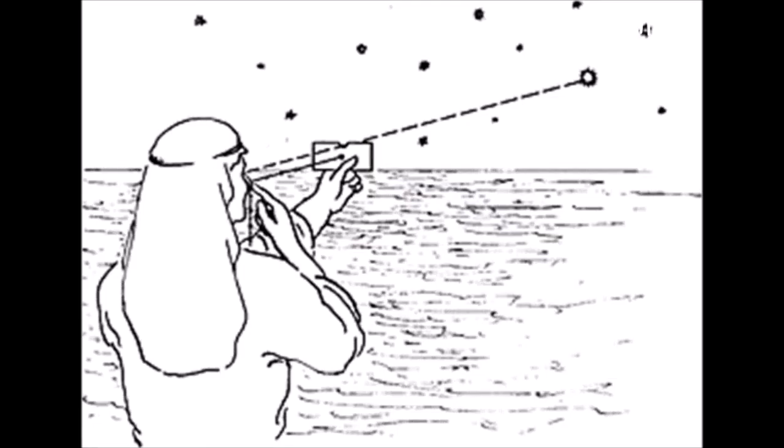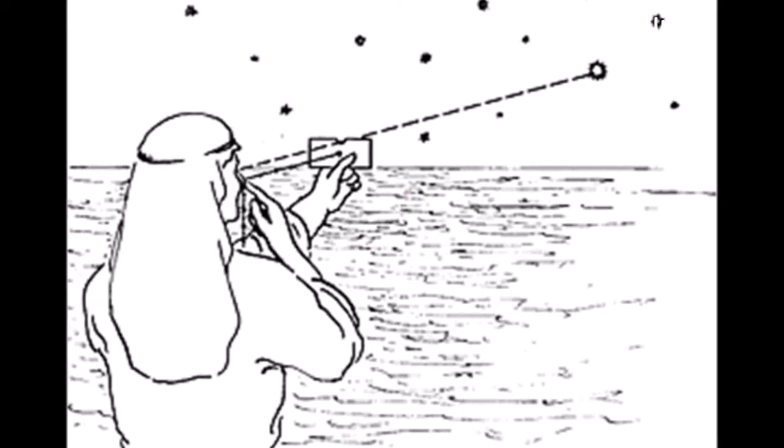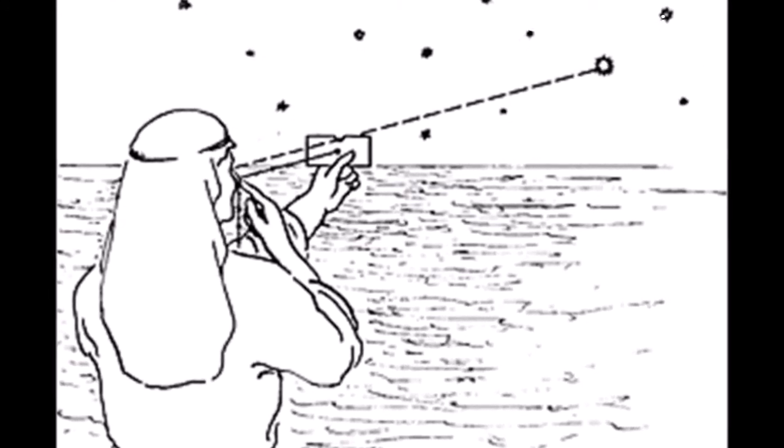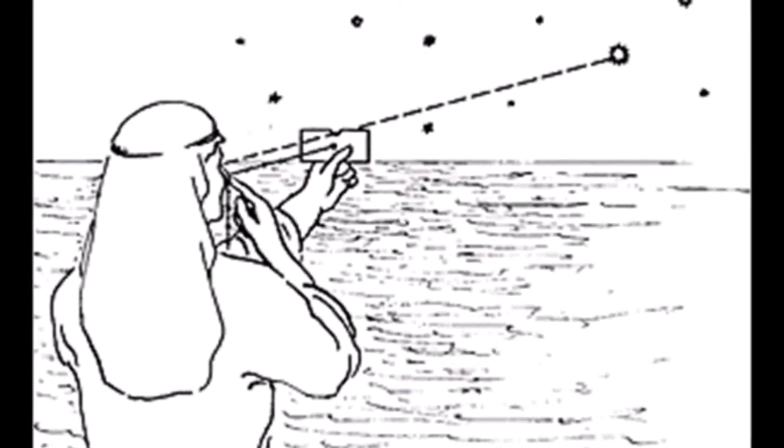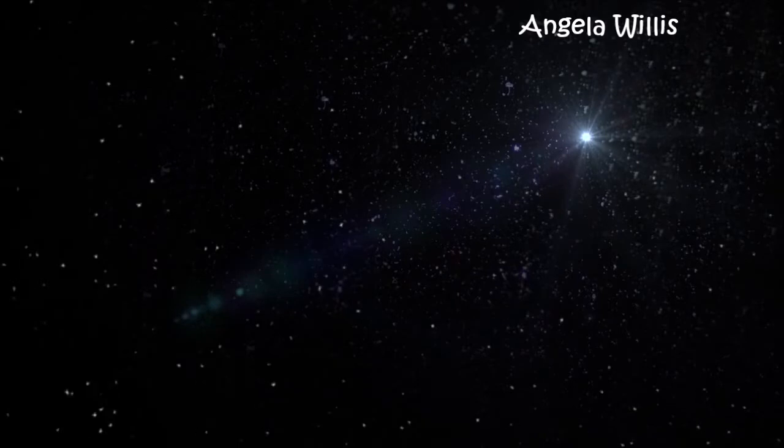Early Arab navigators relied on the stars to navigate significant bodies of water. The Khamal was used to determine latitude at sea by observing the distance between the horizon and a particular star, such as the North Star, at the same time each night.